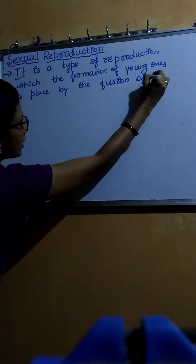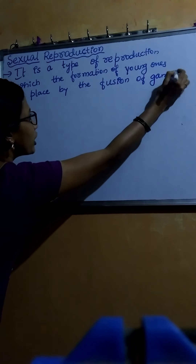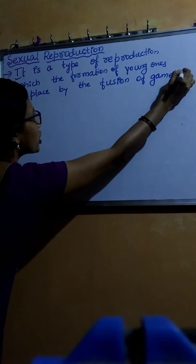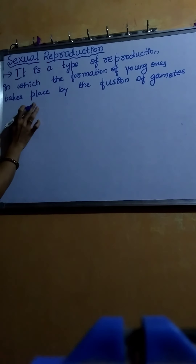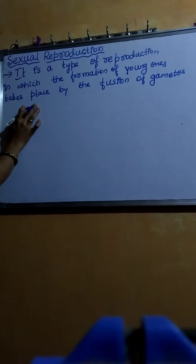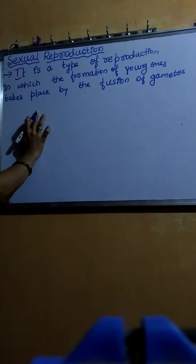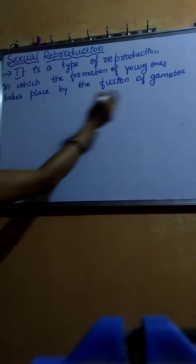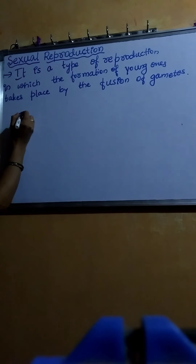Whereas in case of asexual reproduction, there is no formation and no fusion of gametes. But in case of sexual type of reproduction, the formation of young ones takes place by the fusion of gametes — that means fusion of male and female gametes produced by the individual.